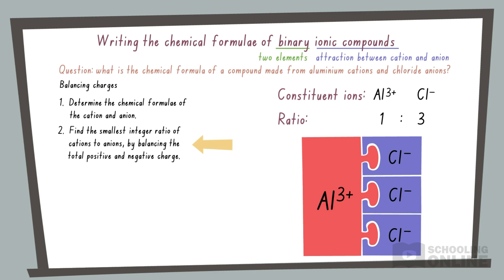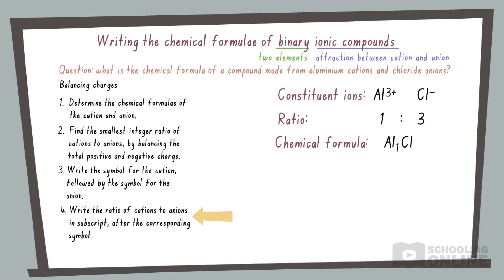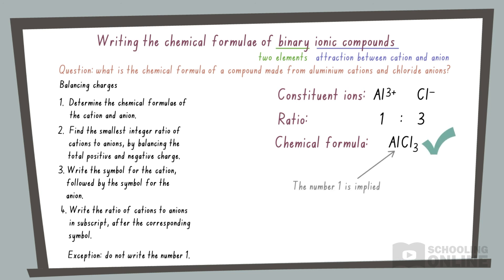Of course, if you are good at mental arithmetic, then you can find the ratio without drawing anything. To write the chemical formula, we start with the symbol for the cation, followed by the symbol for the anion. These are the same symbols used in the periodic table. We also show the ratio of cations to anions using subscripts after each element's symbol. Finally, we do not need to write a subscript 1 if something appears just once in a chemical formula. Hence, this compound is AlCl3, because the number 1 is implied when we write the symbol for aluminium.